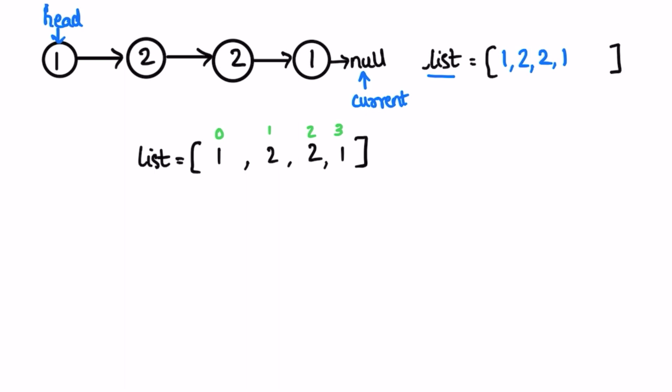Now we declare two pointers to check for palindrome. The first pointer is named left, pointing at the beginning of the list, and the right pointer points at the end of the list. We check if the value at left and right is equal — yes, they are equal.